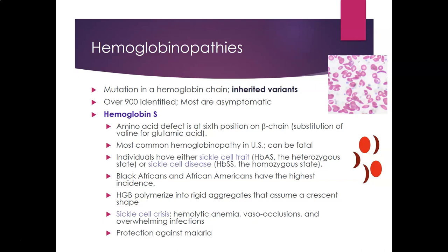Hemoglobinopathies are mutations in one of the hemoglobin chains. There are over 900 identified hemoglobin mutations and most are asymptomatic. The first and most predominant in the U.S. is hemoglobin S—an amino acid defect at the sixth position of the beta chain, where valine substitutes for glutamic acid. It is the most common hemoglobinopathy in the U.S. and can be fatal.